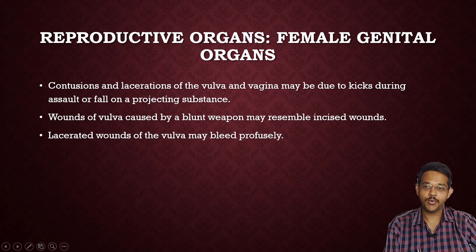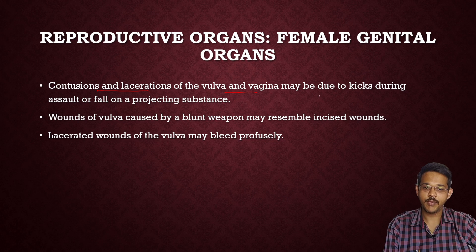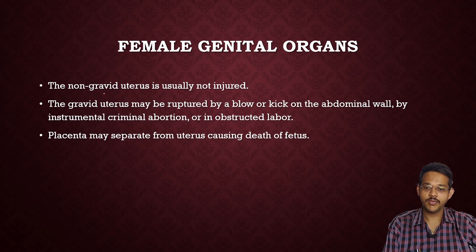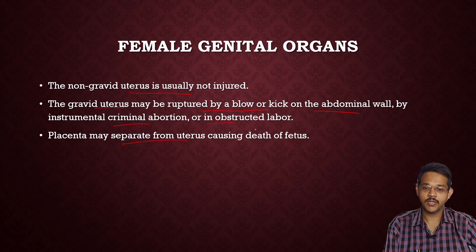Coming to injuries of reproductive organs: contusions and lacerations of the vulva and vagina may be due to kicks during assault or fall on injecting substances. Wounds of the vulva caused by blunt weapons may resemble incised wounds because the skin is lax, and lacerated wounds of the vulva may bleed profusely. The non-gravid uterus is usually not injured as it is well protected behind the pelvis. But the gravid (pregnant) uterus may rupture by a blow or kick on the abdominal wall, by instrumental criminal abortion, or by obstructed labor. The placenta will get separated from the uterus leading to death of the fetus.